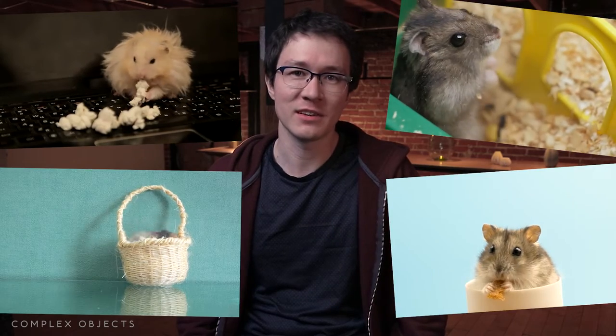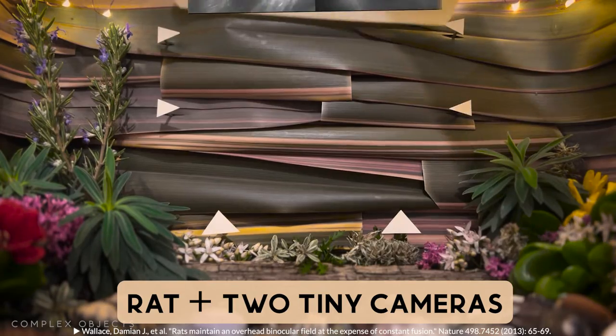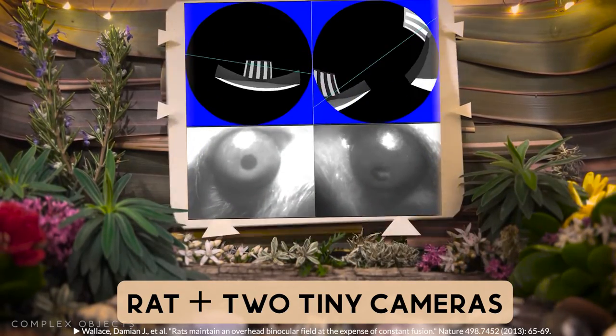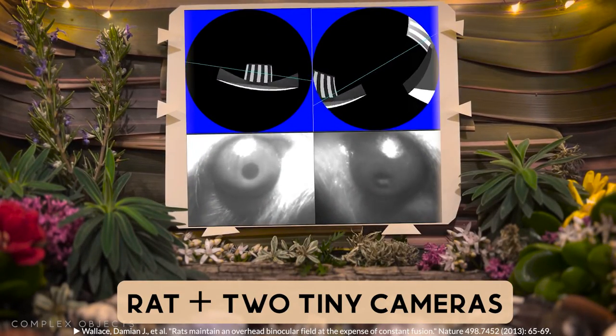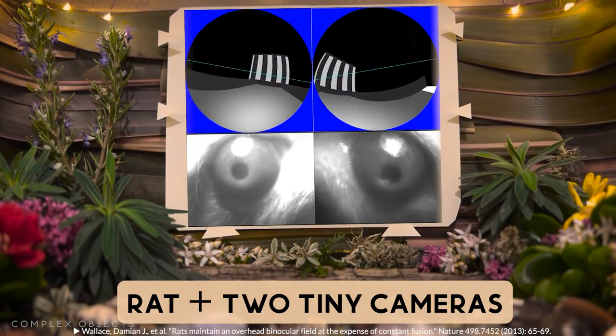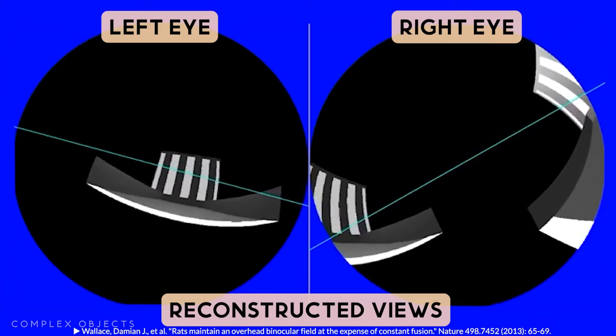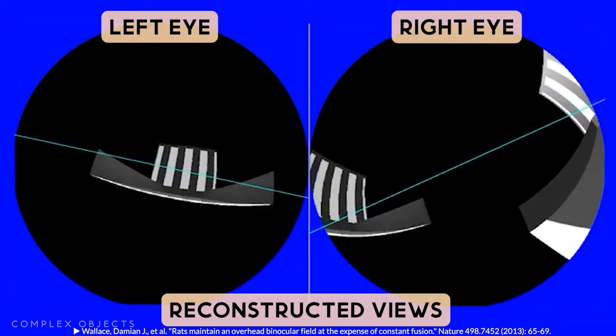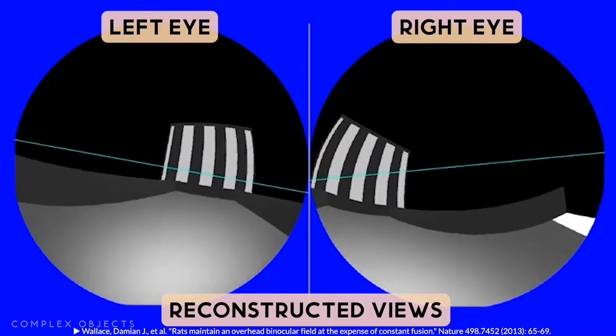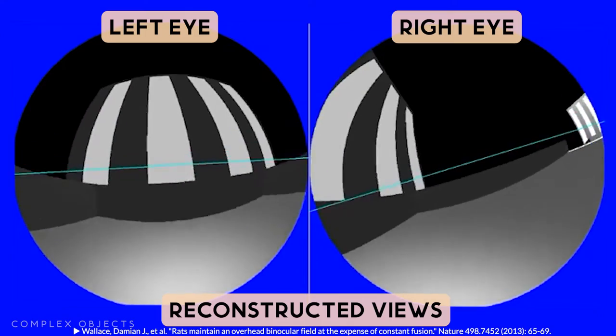Lots of rodents have lateral vision because they're not at the top of the food chain. One study hooked two mini GoPros to a rat's head and found its eyes were moving independently most of the time — it was seeing two images offset by as much as 40 degrees. In its brain, it probably has some way of making sense of all this. It probably feels totally normal.